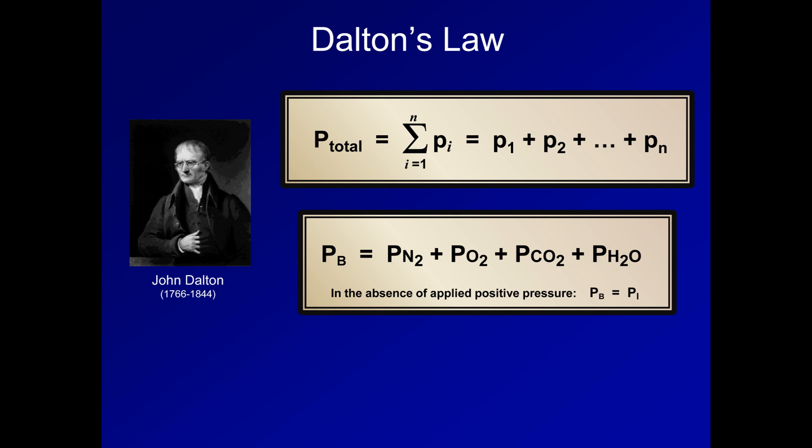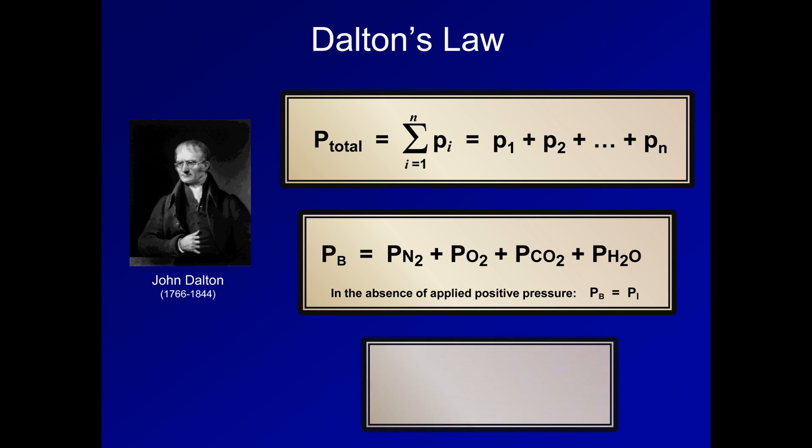A corollary to Dalton's Law can be quickly derived from simple algebra that the partial pressure of a gas X is equal to the fractional concentration of that gas multiplied by the total pressure. For example, the partial pressure of carbon dioxide in alveolar gas is equal to the fractional concentration of CO2 in the alveoli times the total intra-alveolar pressure. And the average intra-alveolar pressure must equal barometric pressure.